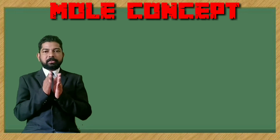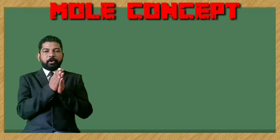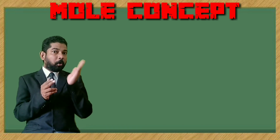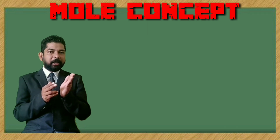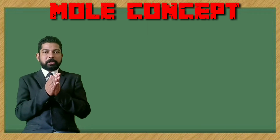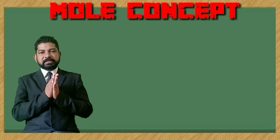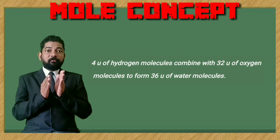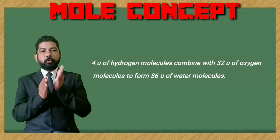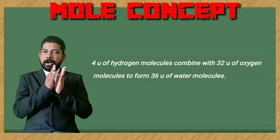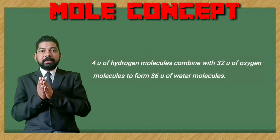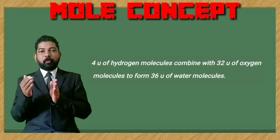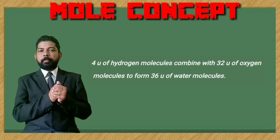In another way, if you are calculating the molecular mass — we know the molecular mass of hydrogen is 2, and there are two molecules of hydrogen, so 2 × 2 = 4 units. In terms of mass, 4 atomic mass units of hydrogen combines with 32 atomic mass units of oxygen and forms 36 atomic mass units of water.